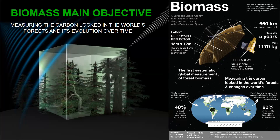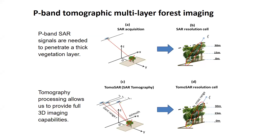Let's talk about the benefits of tomography. P-band low frequency SAR signals are needed to penetrate a thick vegetation layer because its wavelength is about 69 cm. However, this measurement alone does not guarantee good performance in forest applications, because they cannot remove the ground contributions.